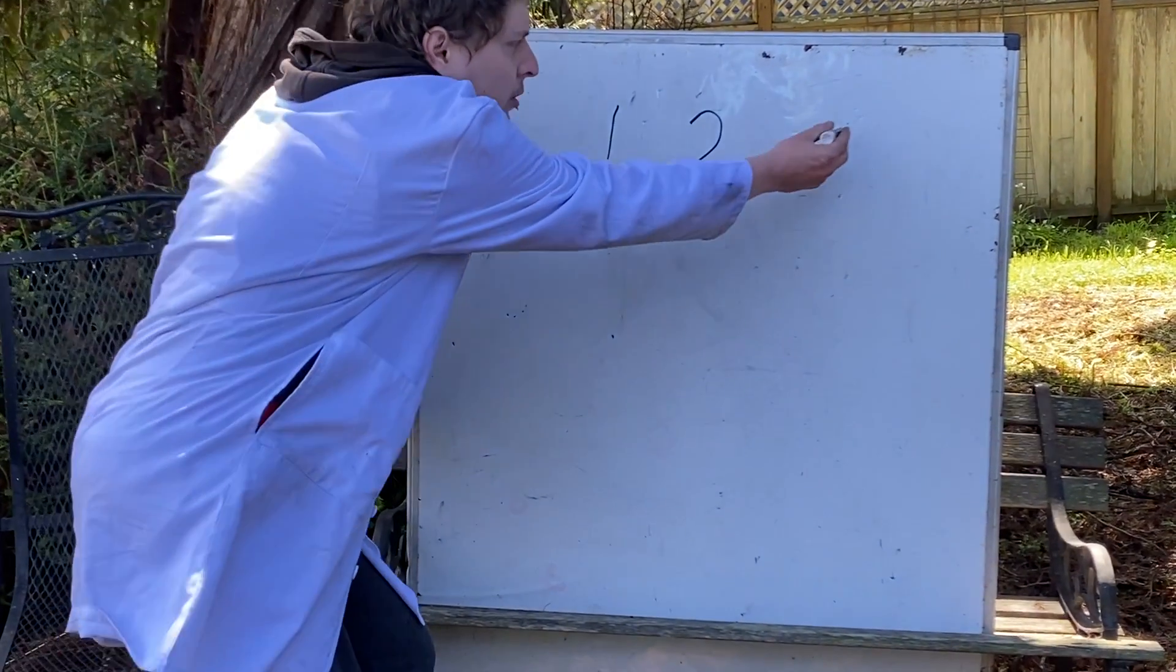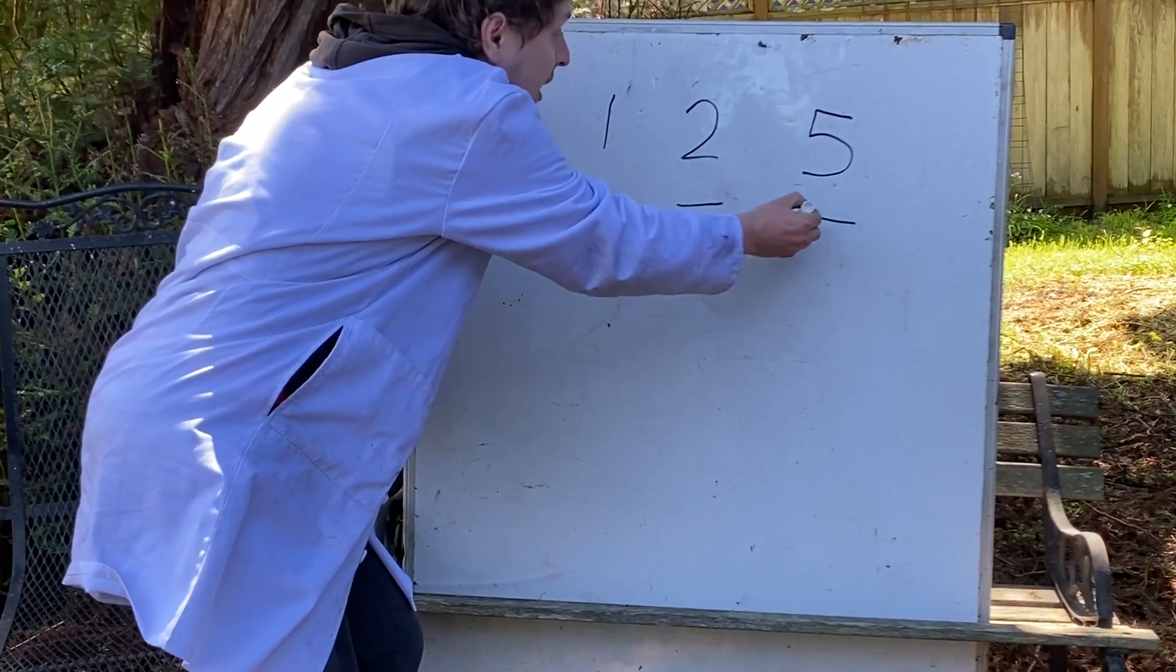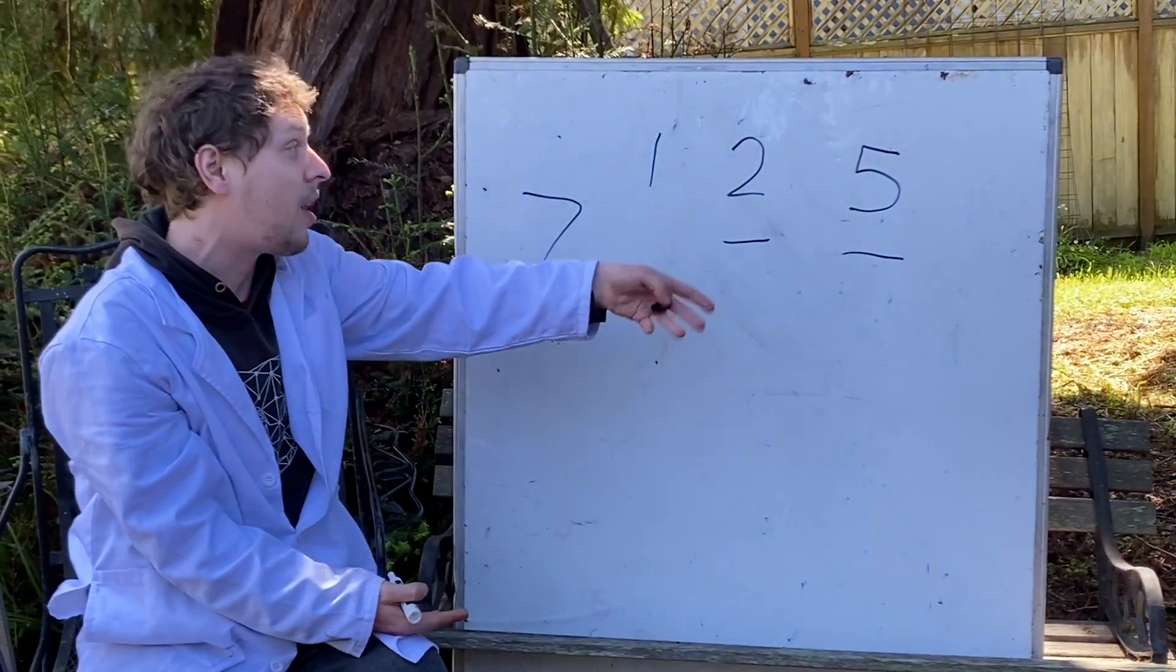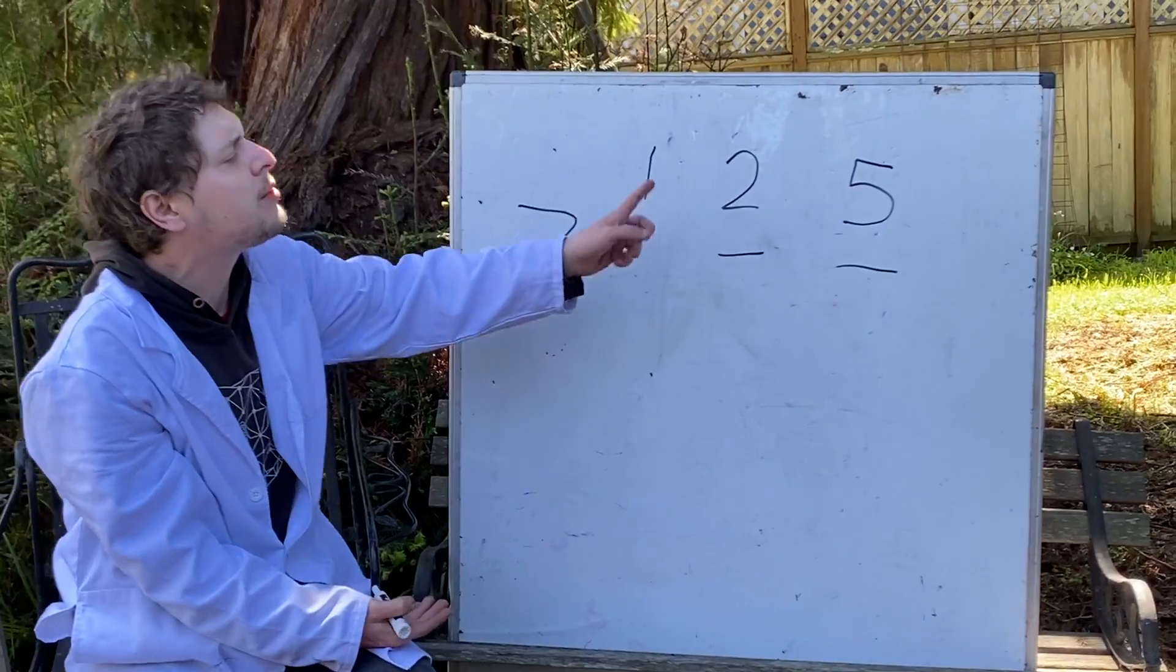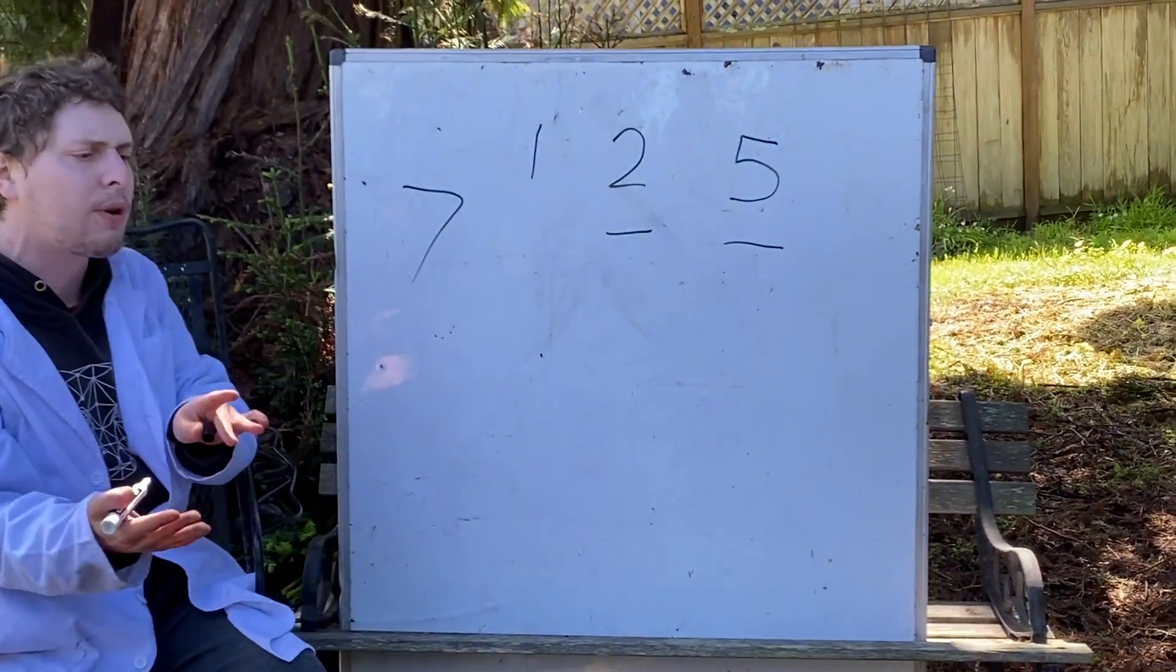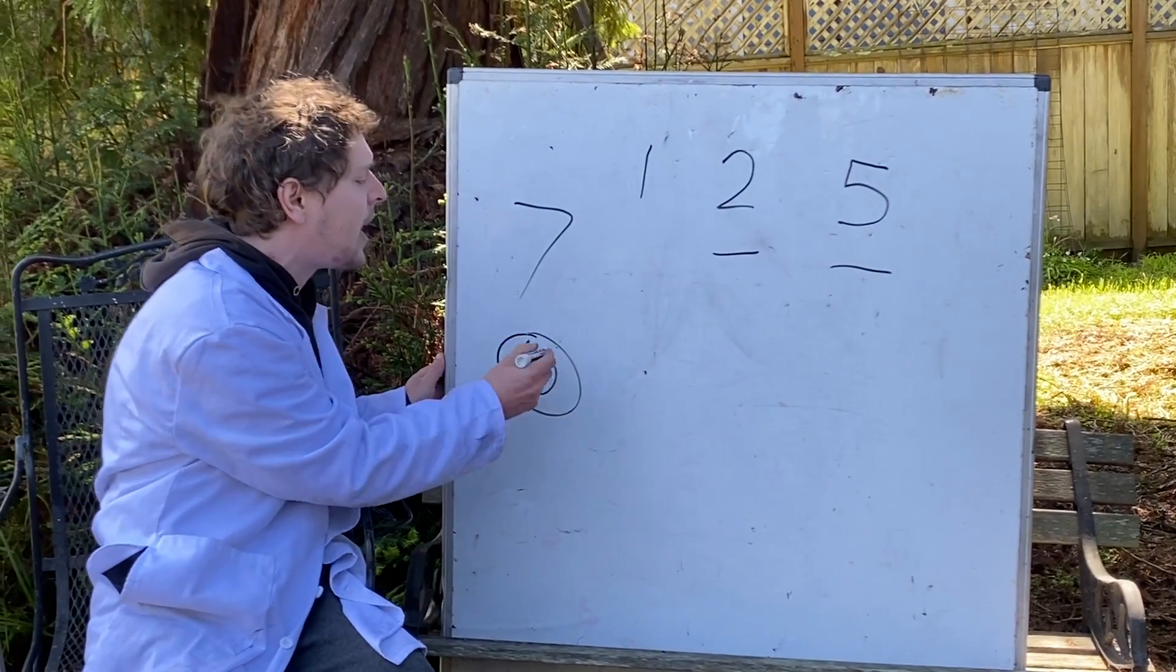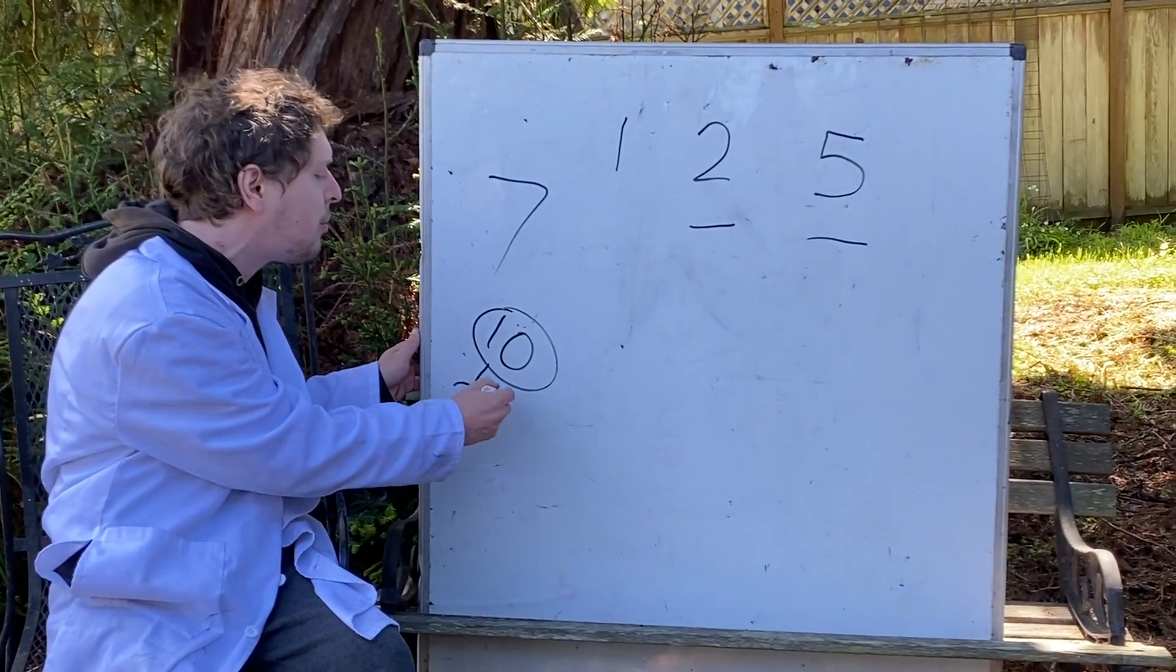Similarly, with multiples of 5, if the last digit's a multiple of 5, the whole number is, and if it's not, it's not. And 2s and 5s have that special trait because we count in a base 10s system. And 10's prime factors are 2 and 5.